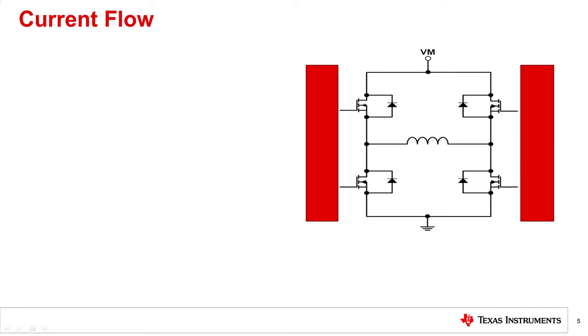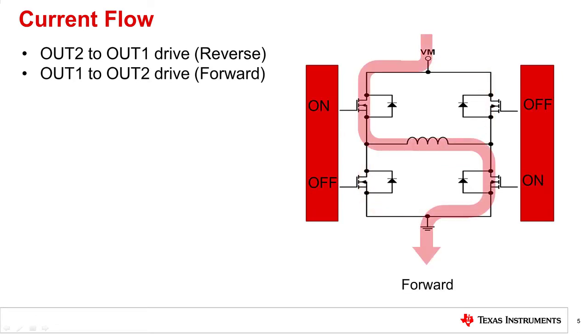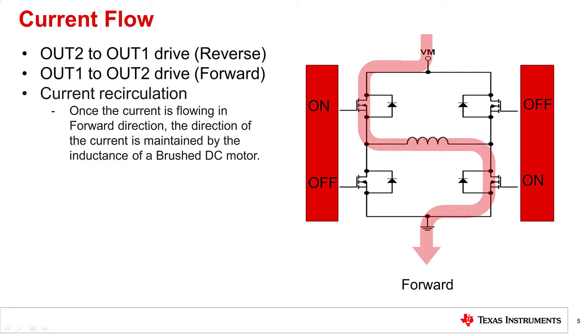In an H-bridge, there are multiple ways to control the flow of current through a brushed DC motor. A brushed DC motor can spin in a reverse or in a forward direction. Once the current is flowing in a forward or reverse direction, the direction of the current is maintained by the inductance of the motor.